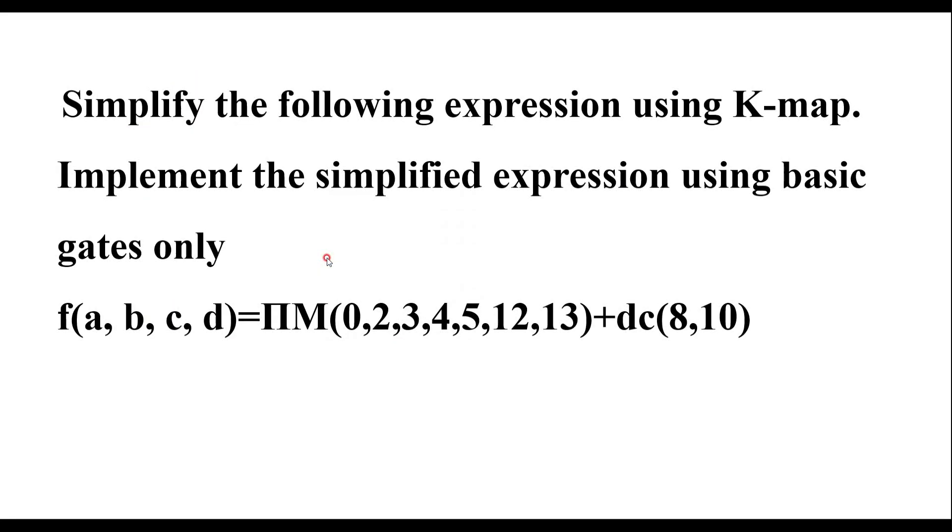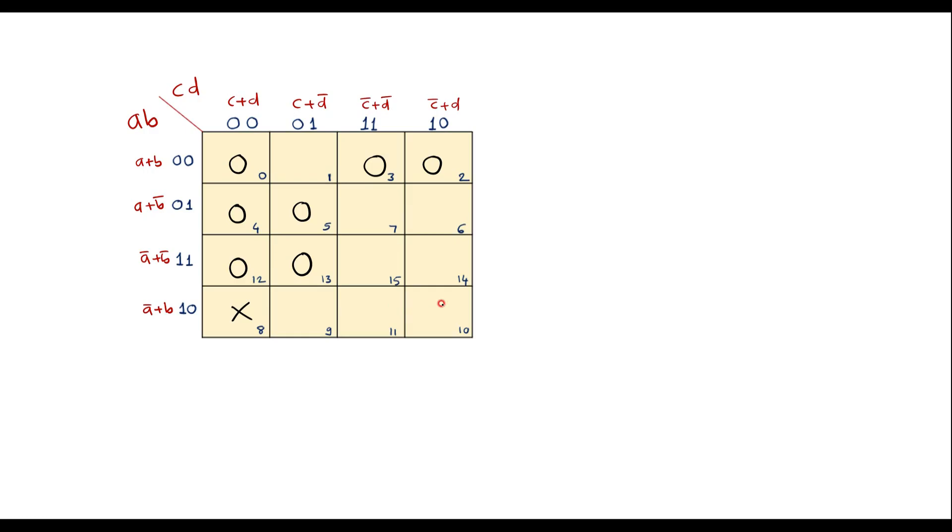And along with this we have don't care terms that is 8 and 10. 8 is don't care, 10 is don't care. By default the remaining cells will be 1. So now to simplify this, now we have to do the grouping of zeros.